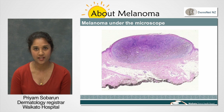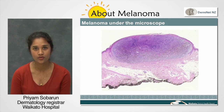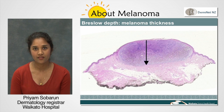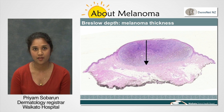Once the pathologist has made a diagnosis of a melanoma, he or she will look for some key features that will determine how good or bad the melanoma is. These are the thickness of the melanoma or the Breslow depth, the presence of ulceration or loss of epidermis, and the presence of mitosis or rapidly dividing cells.